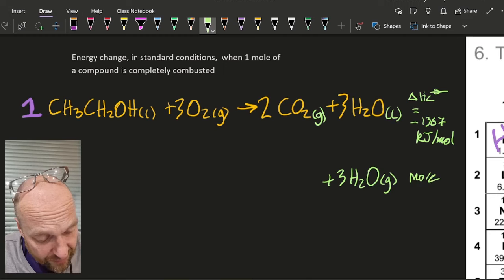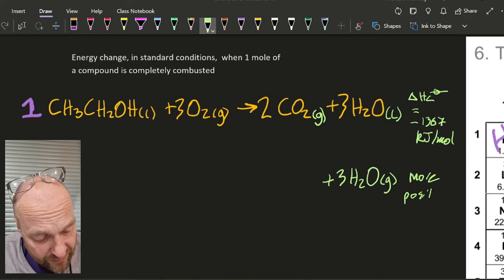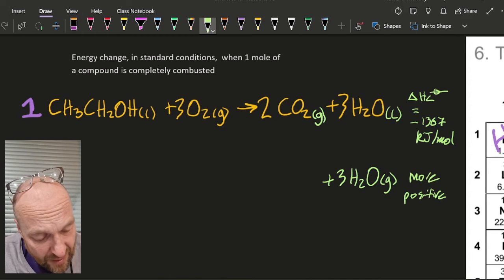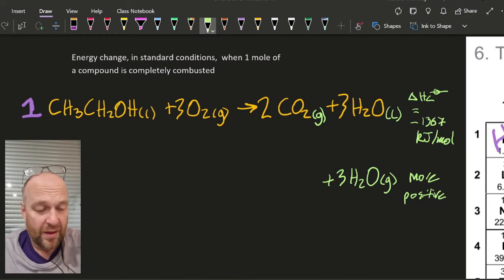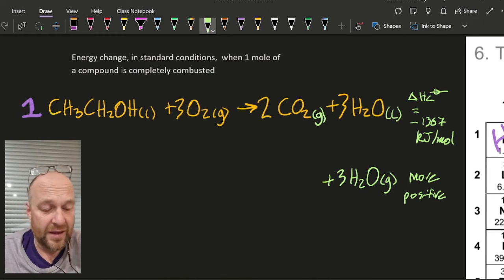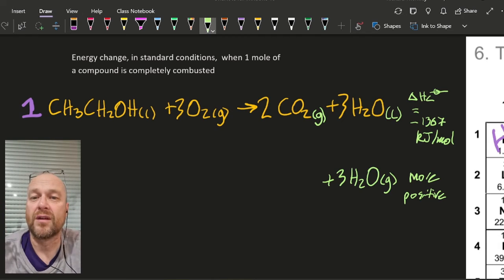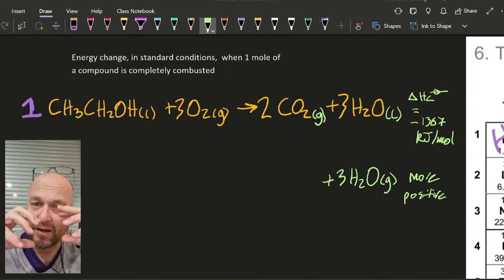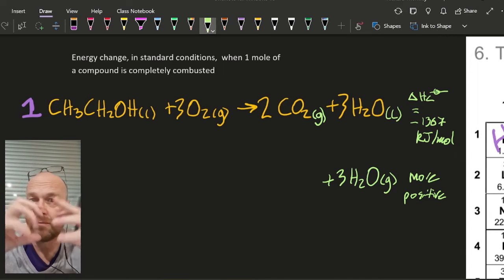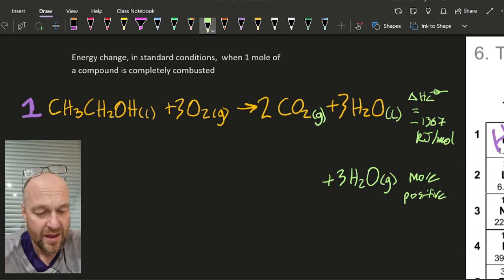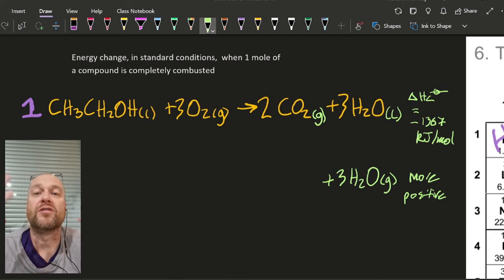And so the answer is that the delta H value would actually become more positive—it would increase. And the reason for that is because if you're making liquid water, it's minus 1367—energy has been released. But if you're going to take some of that energy and turn it from a liquid to gaseous water, breaking hydrogen bonds and all that, then actually not all of that energy is going to be released as heat. Some of that energy is going to go into bond breaking.